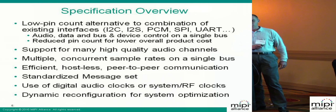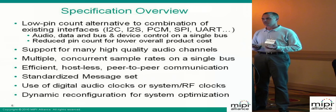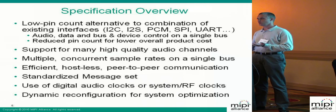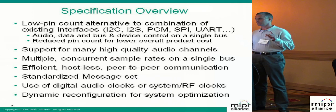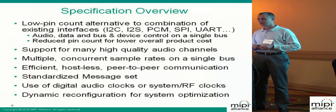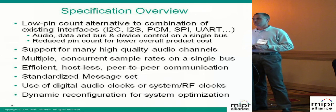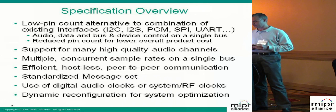We support many high-quality channels and concurrent sampling rates, meaning the ability to send 48 kHz as well as 44.1 kHz on the same bus using the same clocking. We can do peer-to-peer communication efficiently even though this is on a network. To simplify communication, we have a set of standard message sets and protocols that enable you to program efficiently.